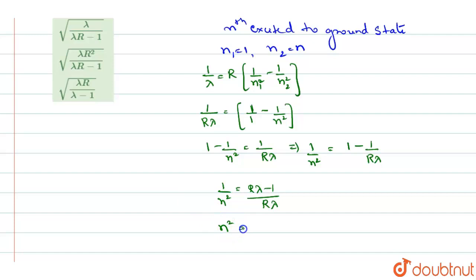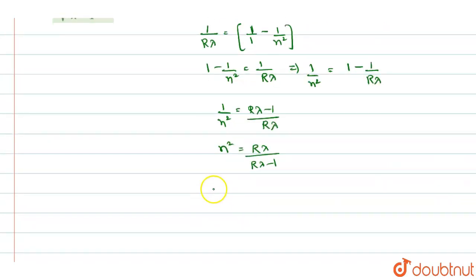you will write the value of N square. N square will be equal to R lambda divided by R lambda minus 1. And so, N will be equal to root of R lambda divided by R lambda minus 1.